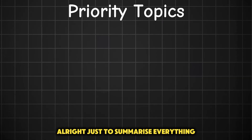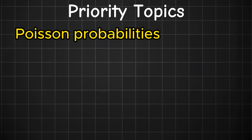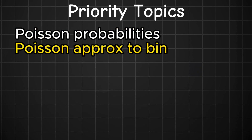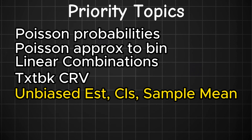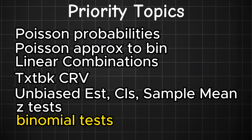To summarize, here's a list of questions I would prioritize for the February 2025 paper: Poisson probabilities, Poisson approximation to the binomial distribution, linear combinations, the textbook continuous random variables question (showing k equals a value, mean, variance and median), unbiased estimates, confidence intervals, sample mean, normal distribution hypothesis test, and binomial distribution hypothesis test.